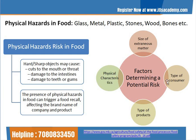Several factors determine the potential risk of physical hazards. First is the size of the extraneous matter — whether it is a large or small piece of metal. Second is the type of consumer — whether the product is to be consumed by an infant, elderly person, or adult, as the risk level changes accordingly. Third is the type of product — for example, if it is infant formula to be consumed by an infant, the risk is very high. Fourth are the physical characteristics of the hazard, such as the sharpness or hardness of the object, which also increase risk.